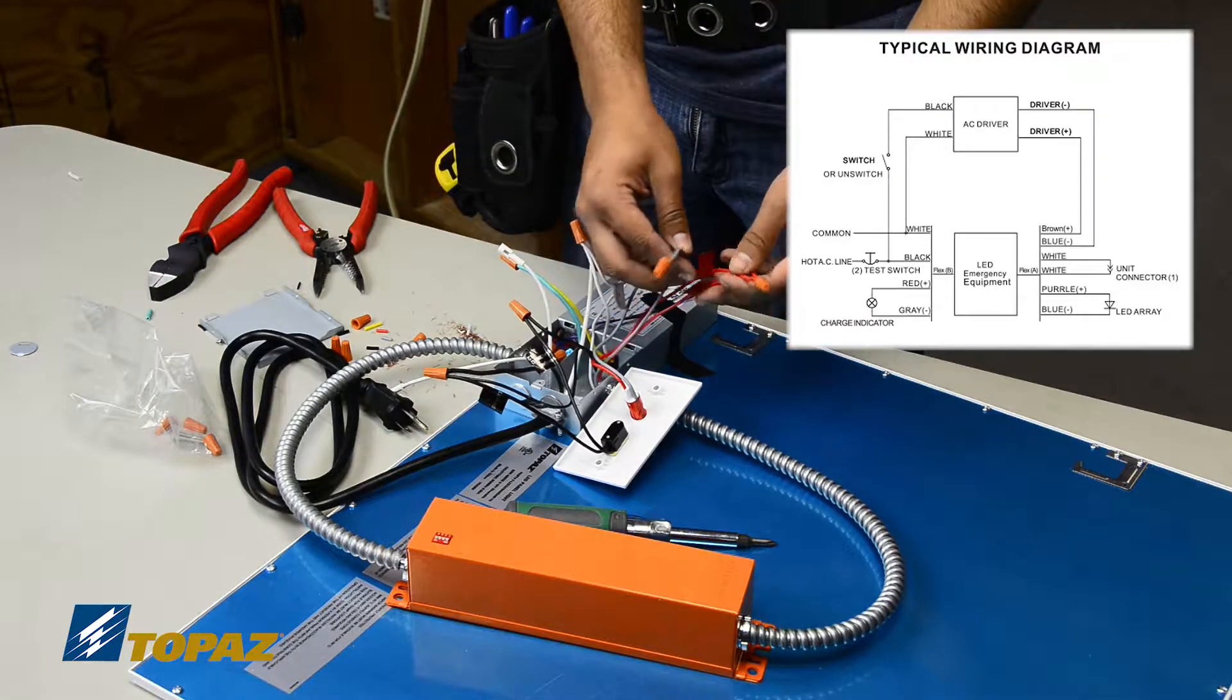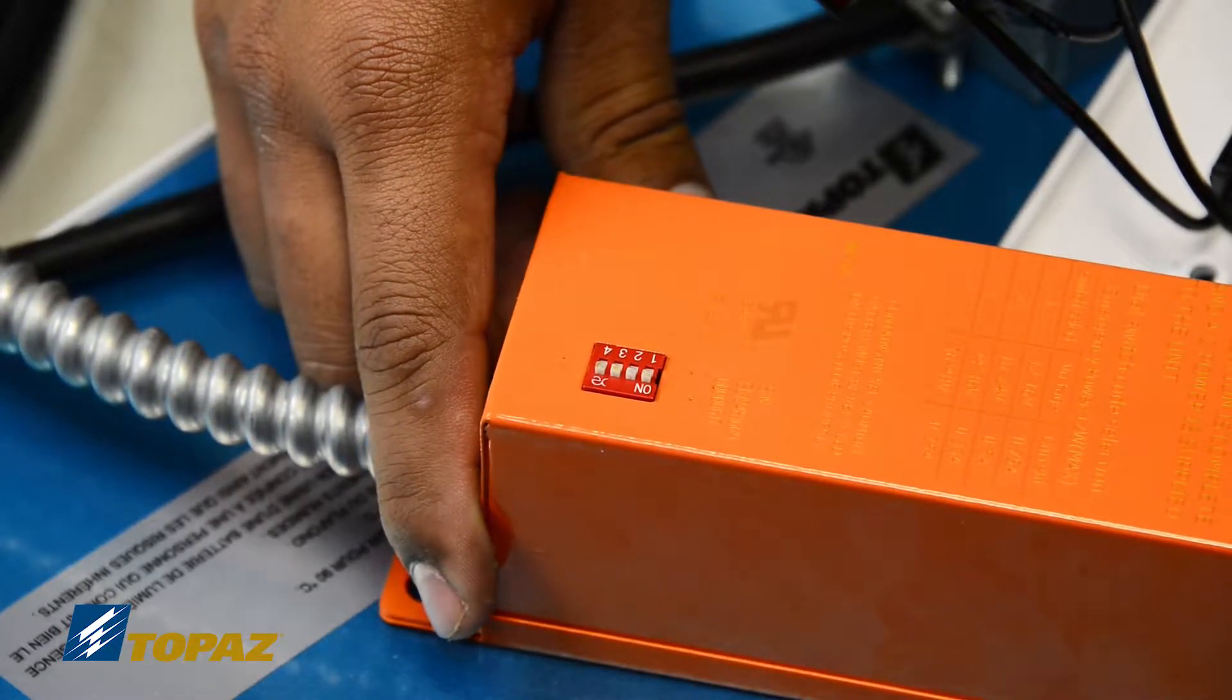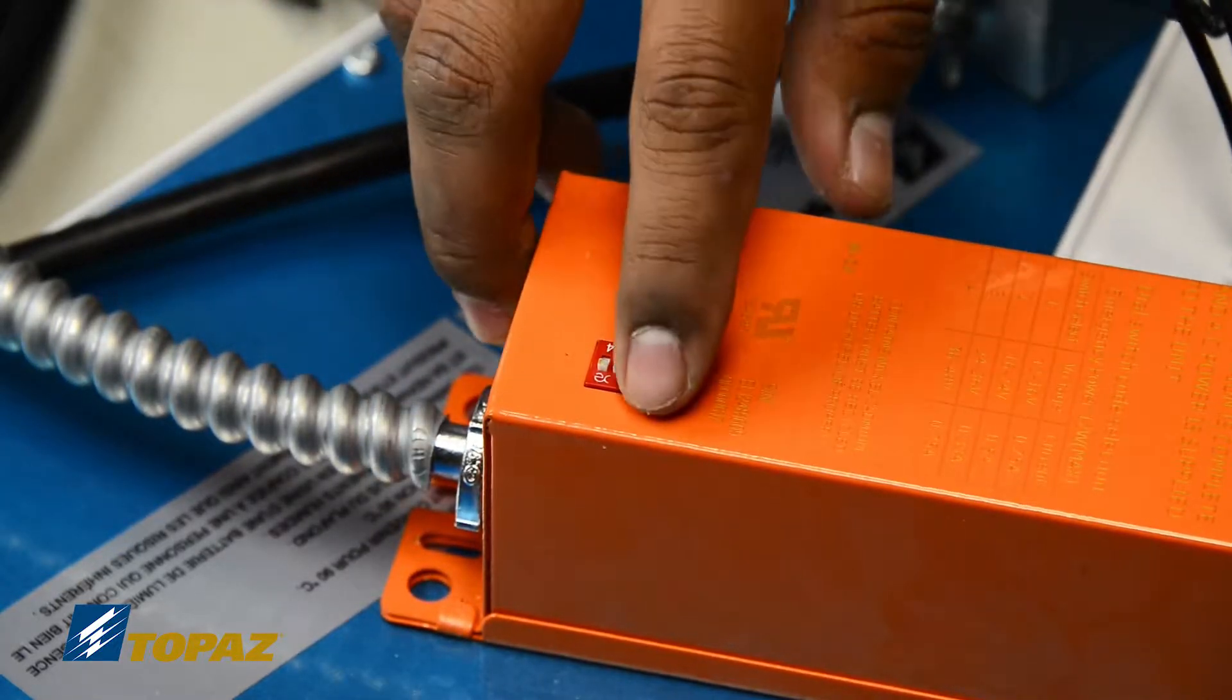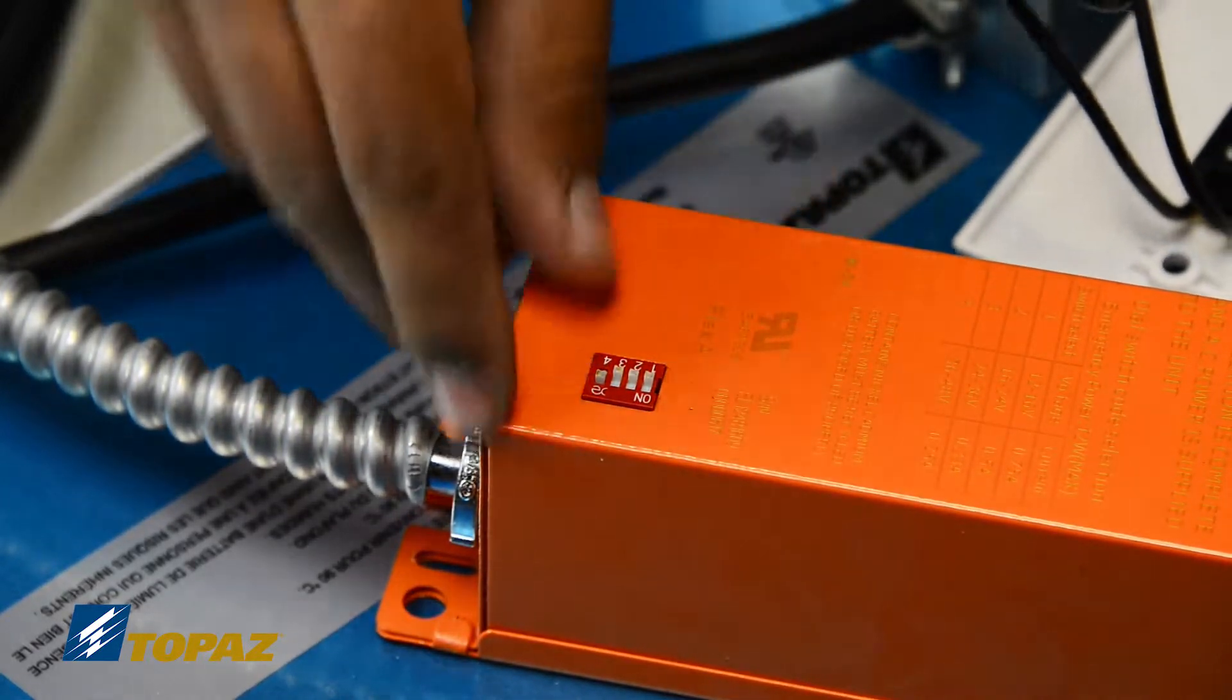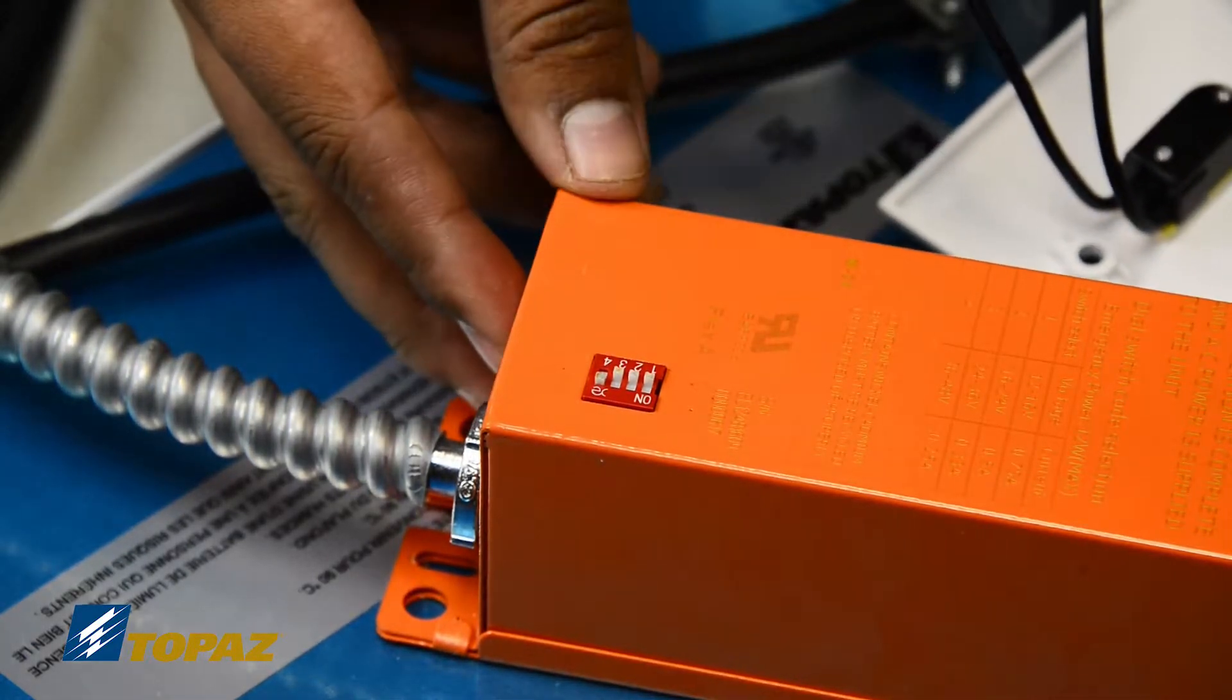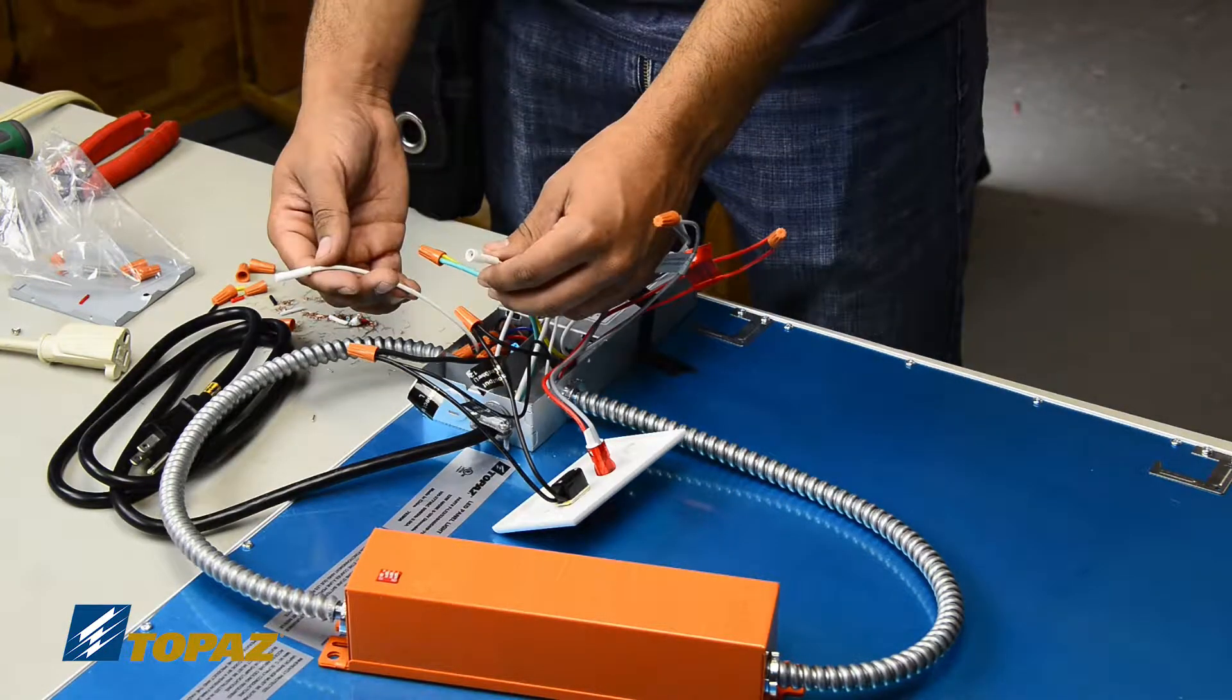The emergency ballast comes with the dip switches set in the on position. What we need you to do is to only keep the number four dip switch in the on position. Number one, number two, and number three slide down to the off position. What that is doing is regulating the voltage to 40 volts. This emergency ballast needs to be supported according to national electrical code.